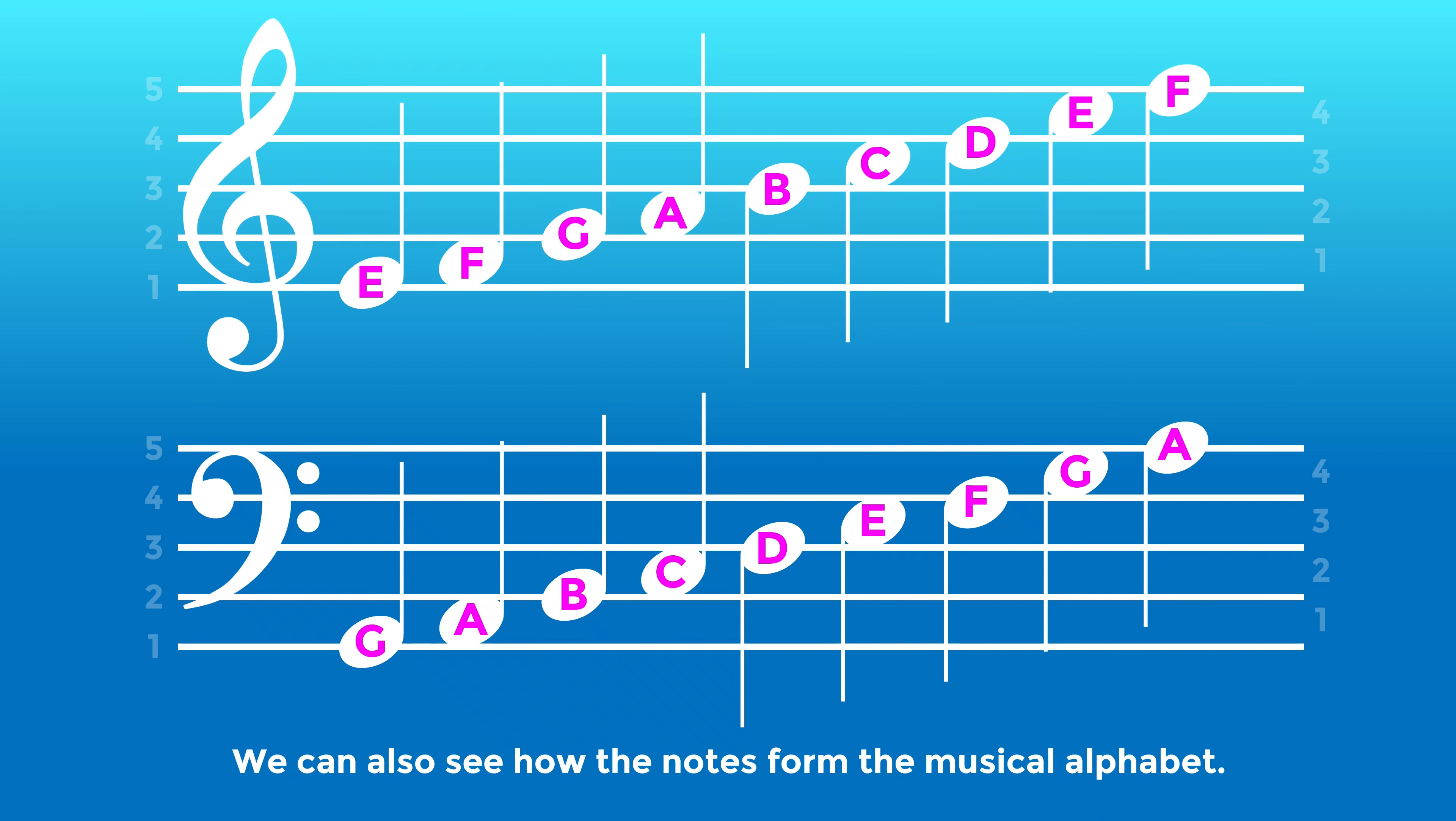We can also see how the notes form the musical alphabet. The musical alphabet is a lot like the English alphabet, except it only uses the letters A, B, C, D, E, F, and G.